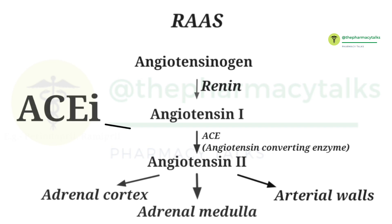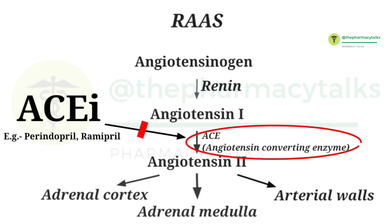The ACE inhibitor inhibits the angiotensin-converting enzyme. Therefore, in the absence of angiotensin-converting enzyme, angiotensin-1 is not converted to angiotensin-2, and thereby ACE inhibitors help in controlling hypertension.